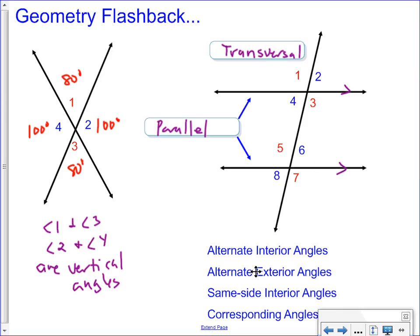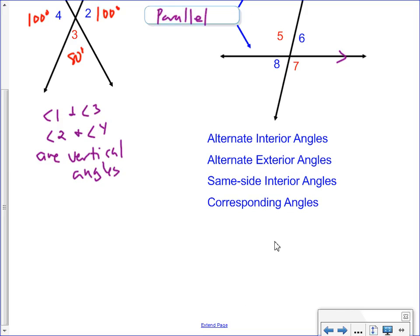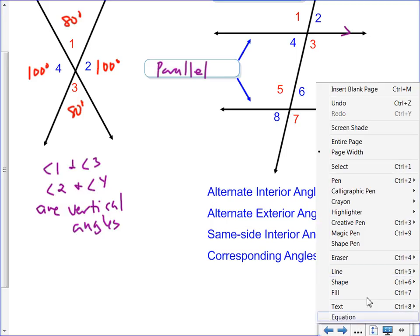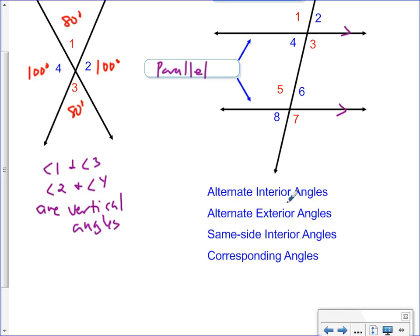Angles that are alternate interior from each other. Take the words and then apply it to the angles. Alternate means alternate sides of the transversal, and interior means inside angles. So an inside angle would be like four, right? What is alternate to four? Six. So these two angles would have the same measure. Angle four would have the same measure as angle six. The other set would be angle five would have the same measure as angle three, for alternate interior.